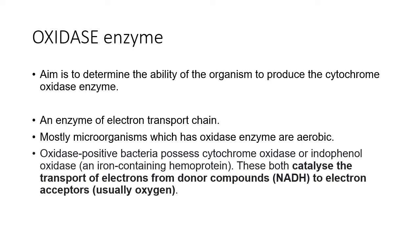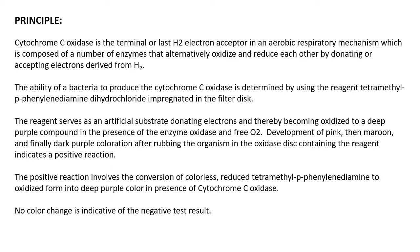The aim of the oxidase test is to determine the ability of an organism to produce the cytochrome oxidase enzyme. Cytochrome oxidase is an enzyme from the electron transport chain, and organisms which have oxidase enzyme are mostly aerobic — in contrast to catalase, which applies to aerobes and facultative anaerobes. Oxidase-positive bacteria possess cytochrome oxidase or indophenol oxidase, which catalyze the transport of electrons from the donor compound (NADH) to the electron acceptor (oxygen).